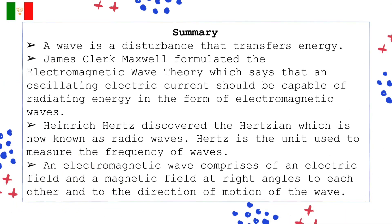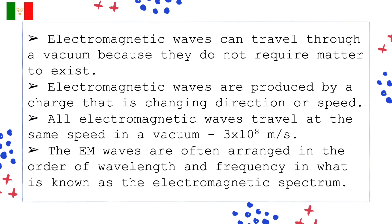Let us have a short summary. A wave is a disturbance that transfers energy. James Clerk Maxwell formulated the electromagnetic wave theory which says that an oscillating electric current should be capable of radiating energy in the form of electromagnetic waves. Heinrich Hertz discovered the hertzian which is now known as radio waves. Hertz is the unit used to measure the frequency of the waves. An electromagnetic wave comprises of an electric field and a magnetic field at the right angles to each other and to the direction of motion of the wave. Electromagnetic waves can travel through a vacuum because they do not require matter to exist. Electromagnetic waves are produced by a charge that is changing direction or speed.